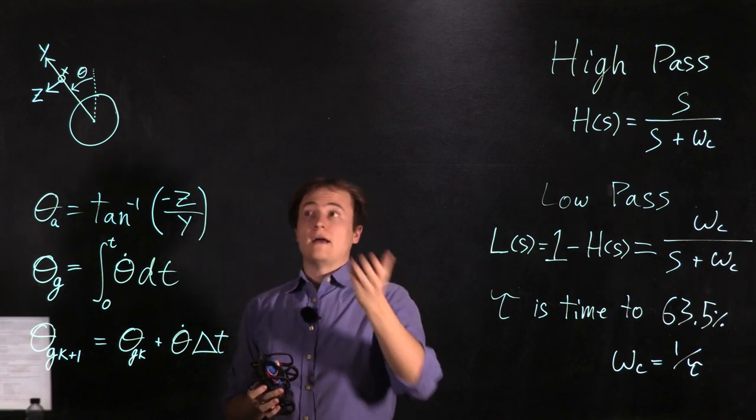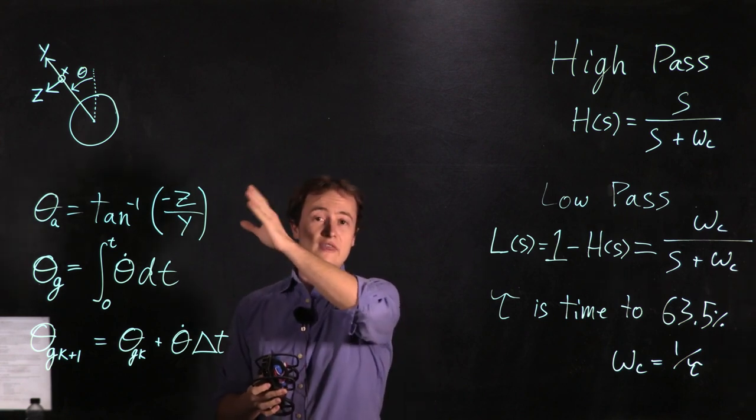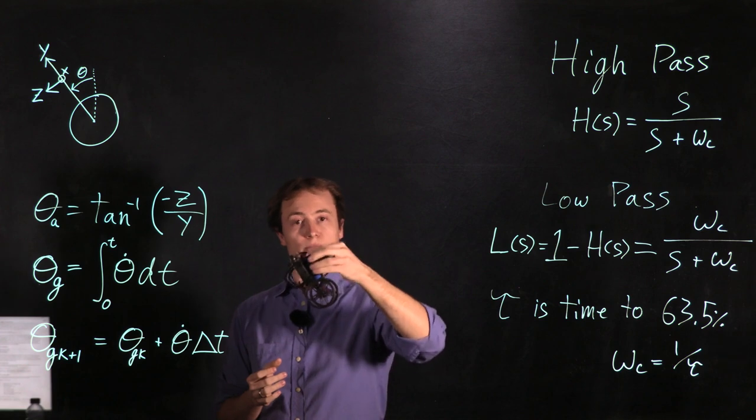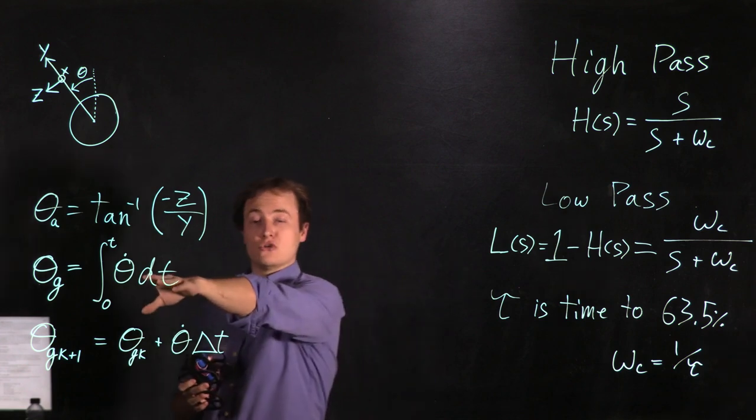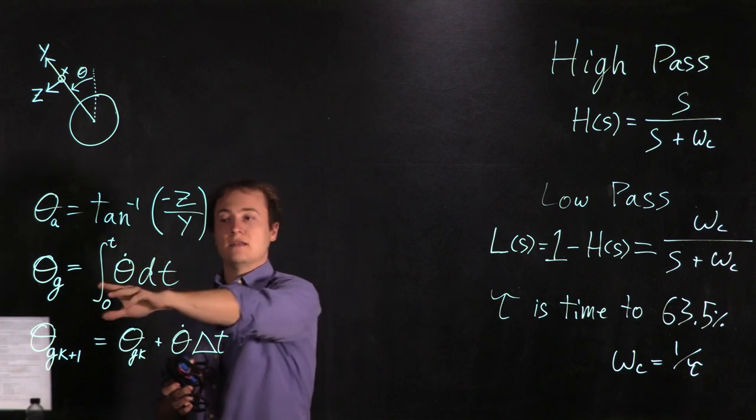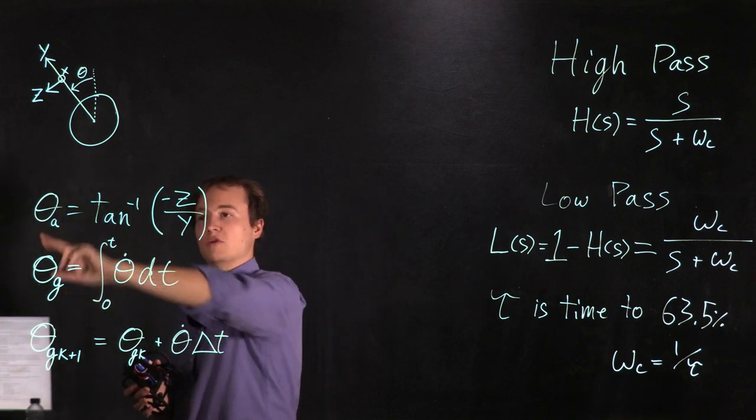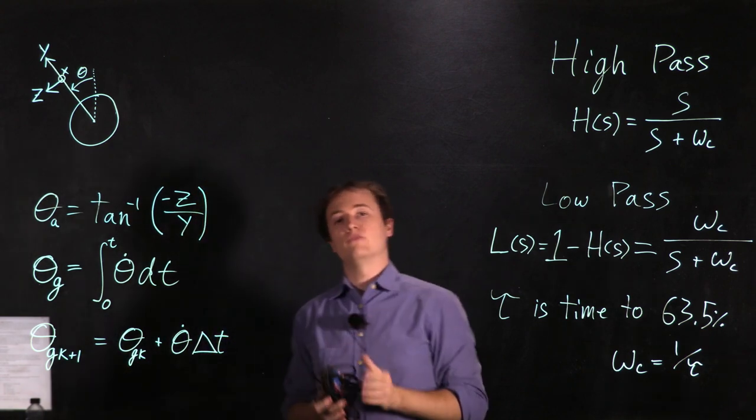Since that aligns with how we are describing the direction of the theta angle of the MIP body we can simply integrate that value over time in order to get a second estimate for theta which we'll call theta g to complement theta a which we derive from the accelerometer.